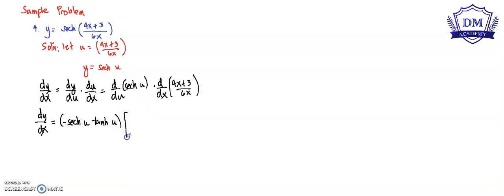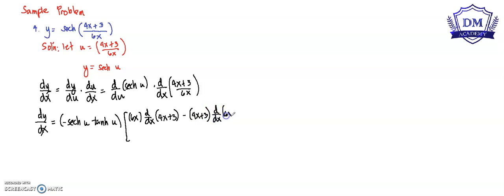That is multiplied by the derivative of (4x + 3) all over 6x. We will use the quotient rule: 6x multiplied by d/dx of (4x + 3), minus (4x + 3) multiplied by d/dx of 6x, all over the square of 6x.